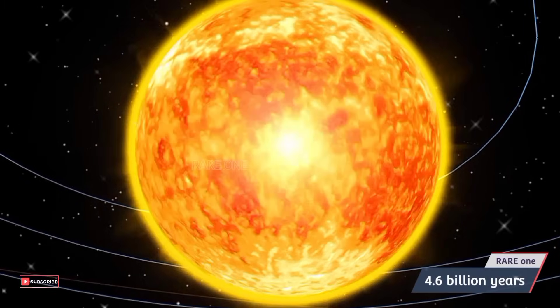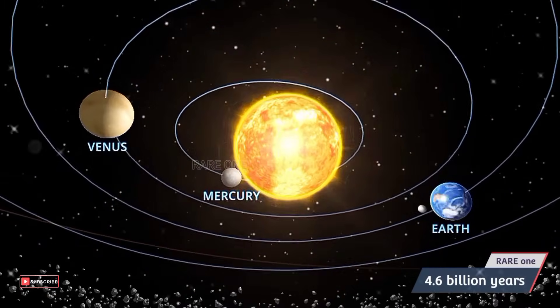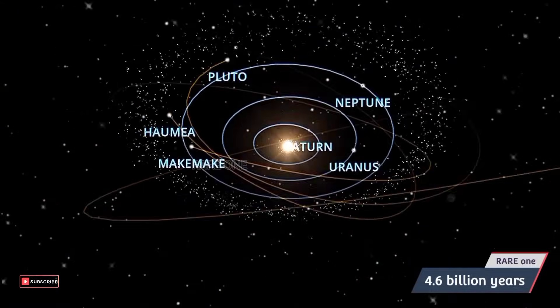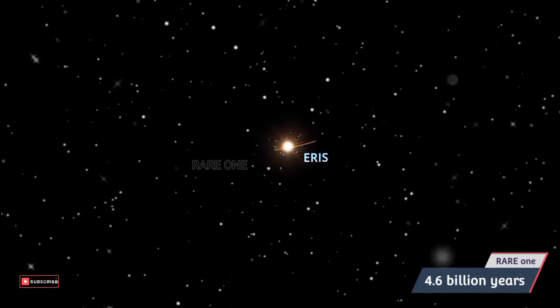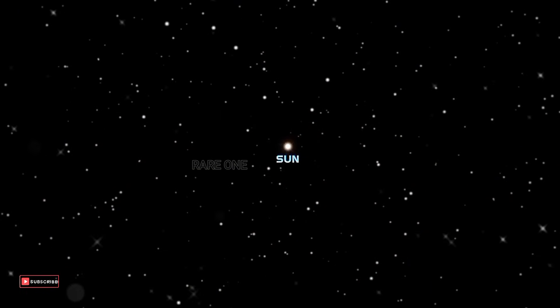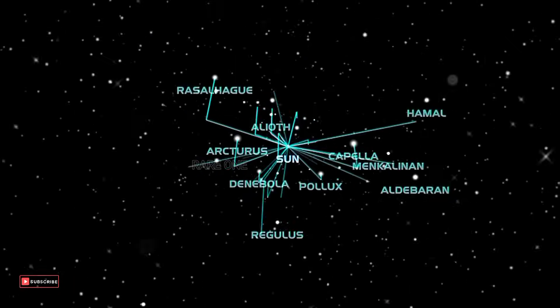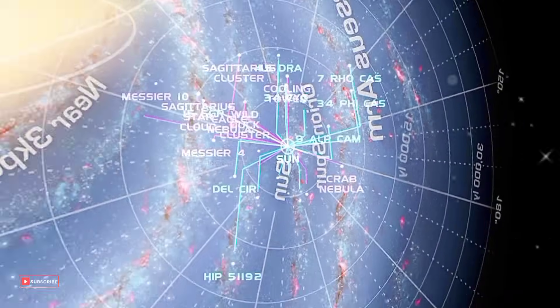Our solar system has been on this incredible orbit around the heart of the Milky Way for a whopping 4.6 billion years. Wrap your head around this: Not only is Earth moving through space, but we're also on two simultaneous trips—one around the Sun and the other through our galaxy.